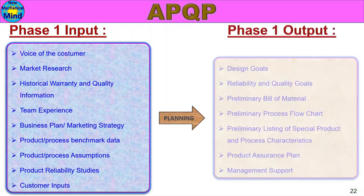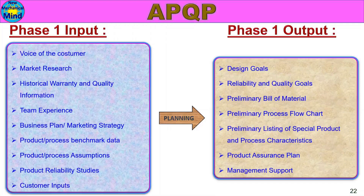Now let's see the outputs. The Phase 1 outputs are: Design Goals, Reliability and Quality Goals, Preliminary Bill of Material, Preliminary Process Flowchart, Preliminary Listing of Special Product and Process Characteristics, Product Assurance Plan, and Management Support. We will see the main outputs in detail.